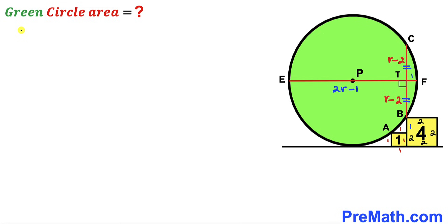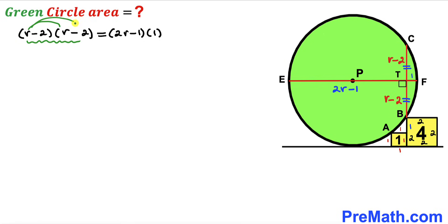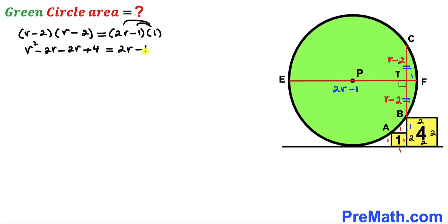We write (r minus 2)(r minus 2) equals (2r minus 1) times 1. Expanding by double distribution: r squared minus 2r minus 2r plus 4 equals 2r minus 1. Combining like terms on the left: r squared minus 4r plus 4 equals 2r minus 1.